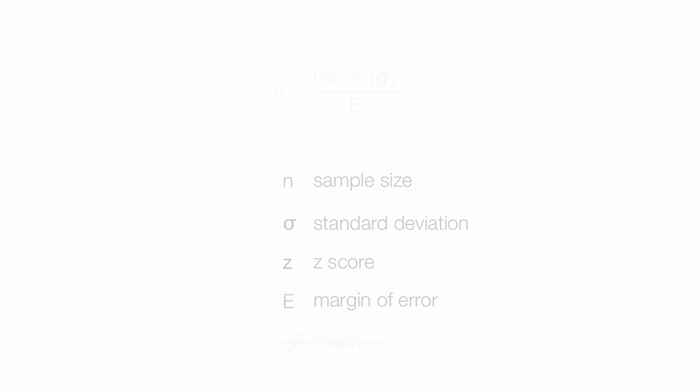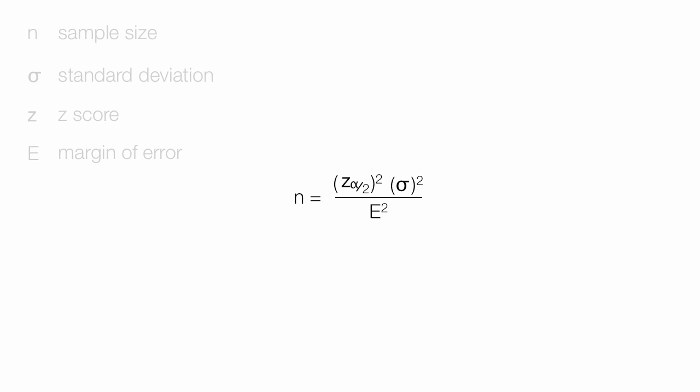I am going to assume a standard deviation of 25, a z-score of 1.96, which is 95% confidence, and a margin of error of 5. So I take the 1.96, and I square it. I take 25, the standard deviation, and square it.